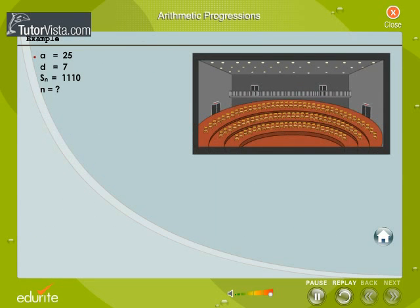In the example of the auditorium, the number of seats in the first row, that is a is equal to 25, the common difference d is equal to 7. How many rows will the auditorium need so that the capacity is 1,110 people?